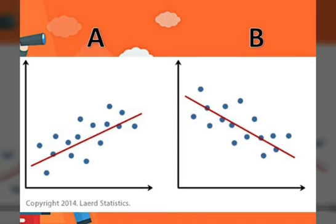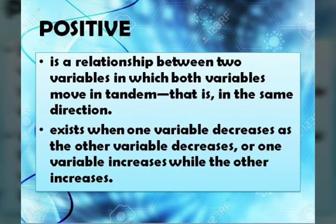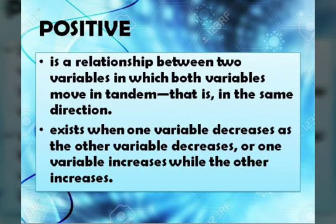Positive relationship is a relationship between two variables in which both variables move in tandem — that is, in the same direction. It exists when one variable decreases as the other decreases, or one variable increases while the other increases. It is very important to understand the relationship between variables to draw the right conclusions. Even the best scientists can get this wrong, and there are several instances of how studies get correlation and causation mixed up. Positive relationship implies an increase of one quantity causes an increase in the other — the two variables are directly proportional.